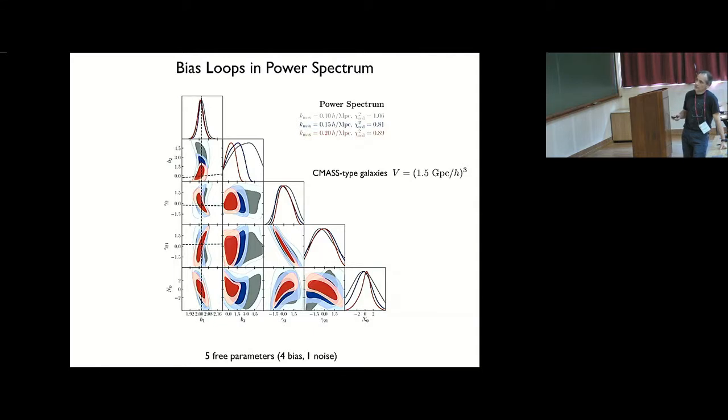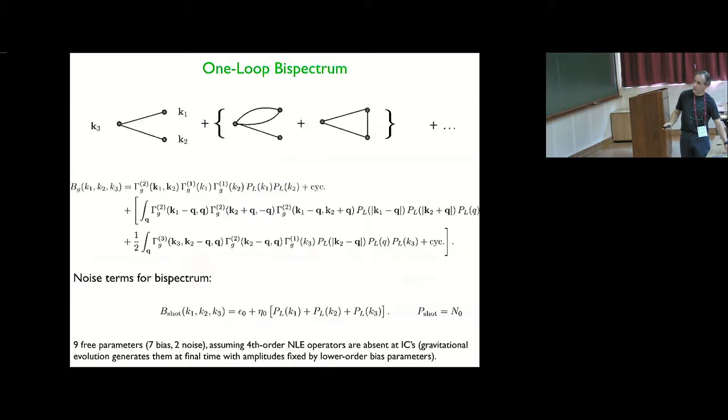And you can see, so the dashed line here is the correct answer for B1. You can see as you march, as you go to higher and higher k, then you get the right answer for B1. Again, the other parameters are poorly constrained, because the power spectrum doesn't do a good job on constraining the other parameters.